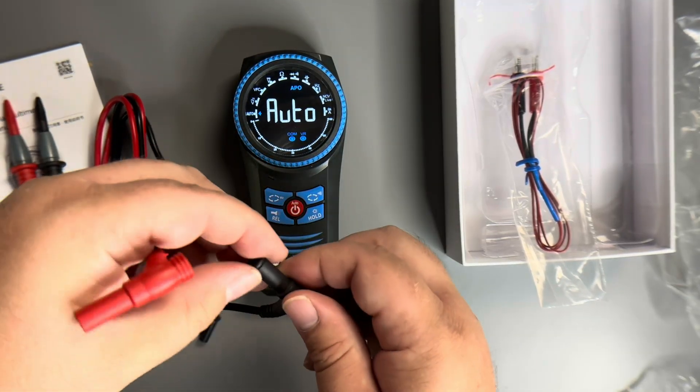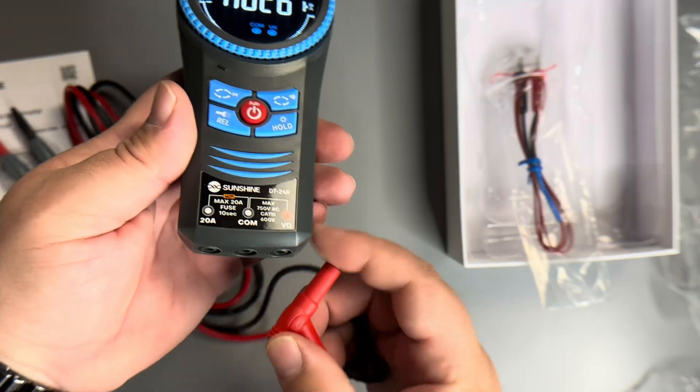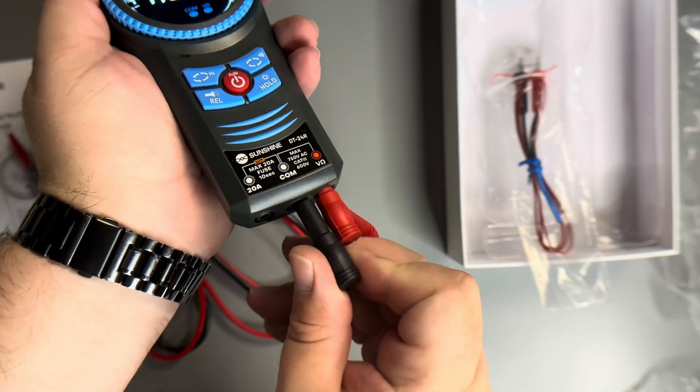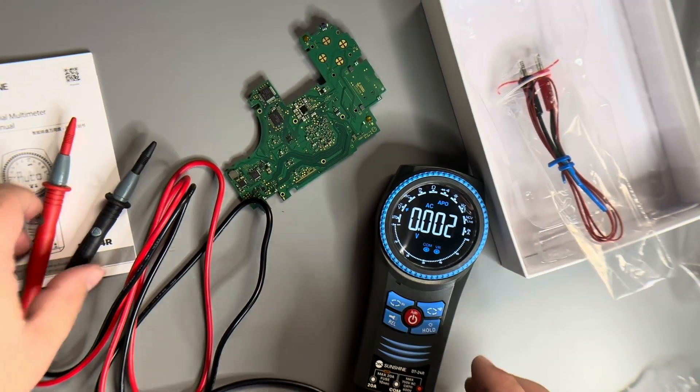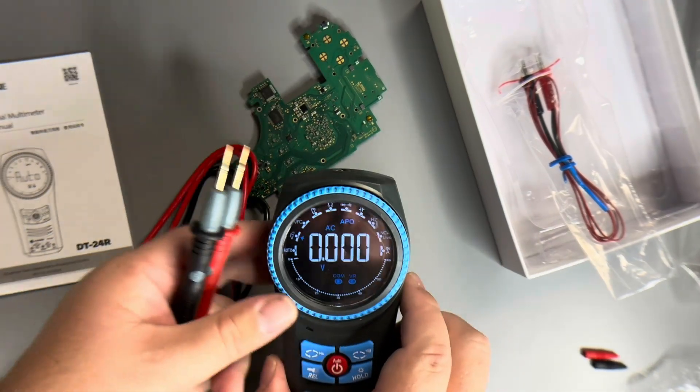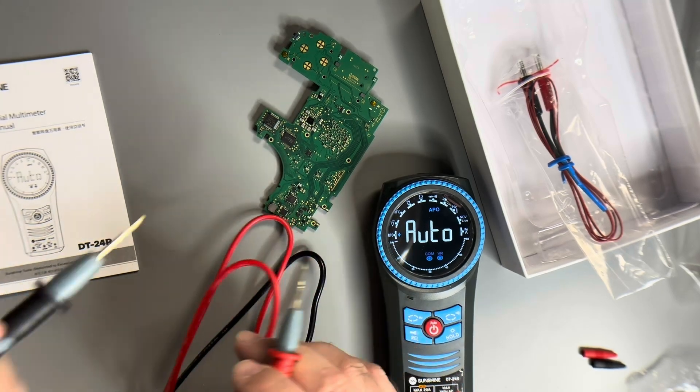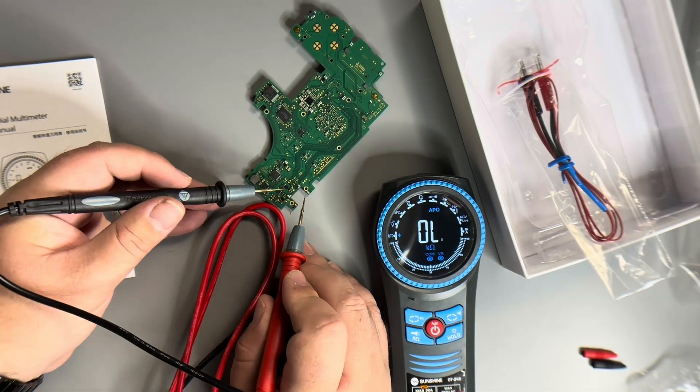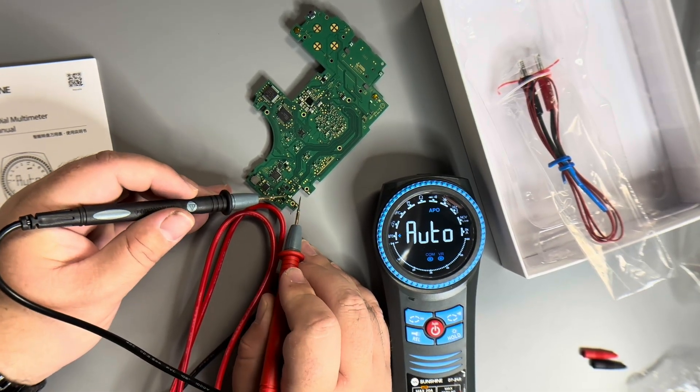I'm going to take the black and red probes. I'm going to put red here on this side, black in the middle, and just get out a random logic board. And I've got it set in auto, and let's see what it decides to show me. Touching ground, it definitely shows continuity.